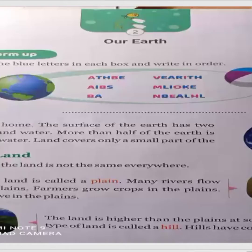And the next type of land is hill. The land is higher than the plains at some places. Such type of land is called a hill. Hills have cool weather.